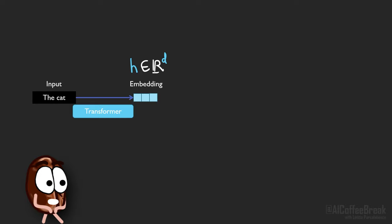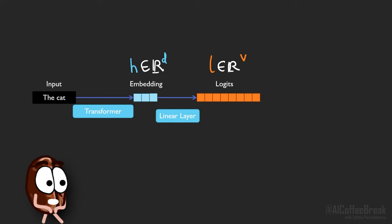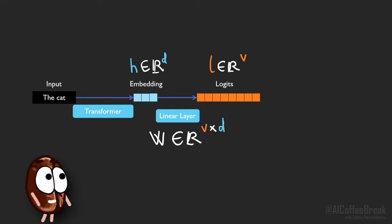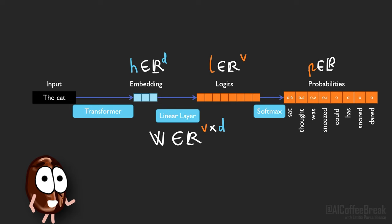A linear layer takes H and maps it to a so-called logit vector, which is as long as the vocabulary size V. In other words, a matrix multiplication projects H into the logit space of dimensionality V, where V is the number of tokens in the model vocabulary. Then the softmax scales the entries of the logit to numbers between 0 and 1 which add up to 1. This is why we can interpret these values as next token probabilities. And this was all textbook knowledge.